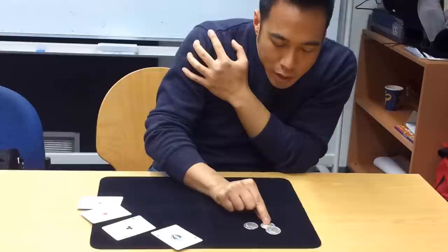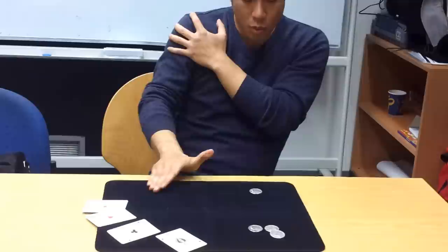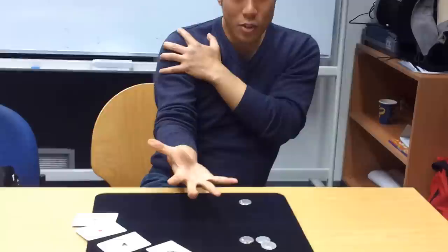This coin will travel from here to there, landing in a perfect square. Perfect square. Can you see? Watch. Let's open that up. Perfect square. Ready? Watch.